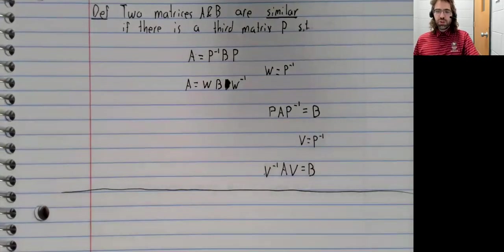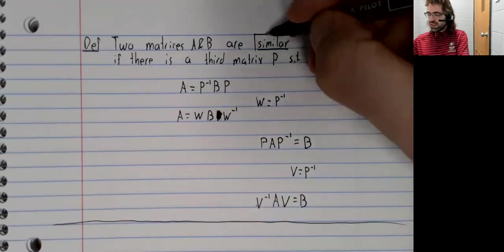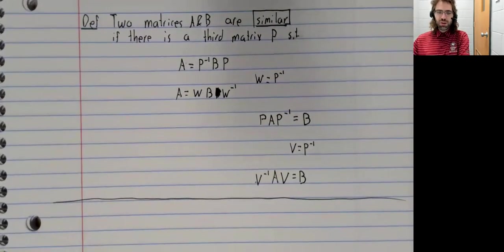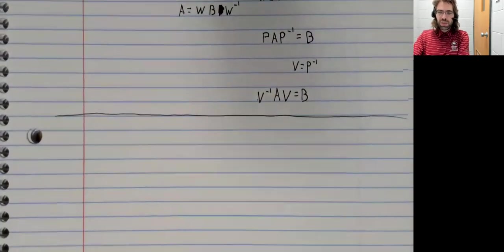Well, presumably from our understanding of the English language word similar, if two matrices are similar, they have something in common.